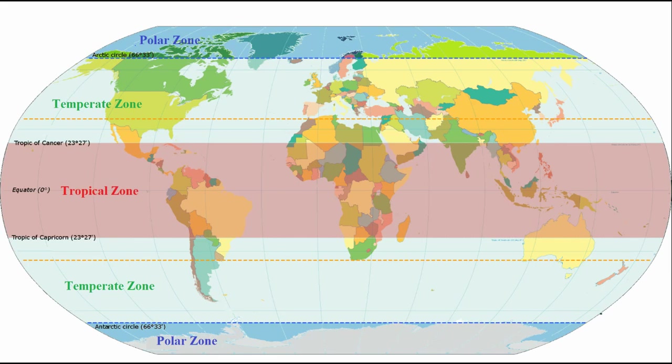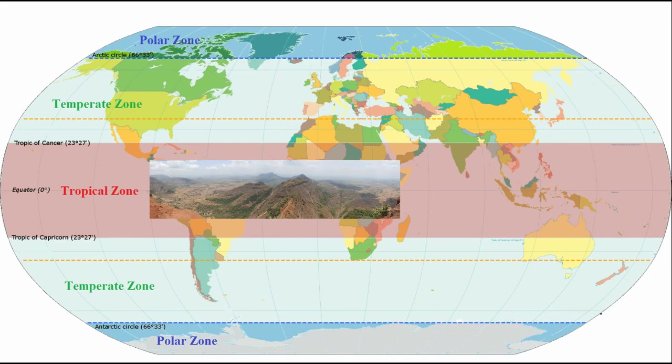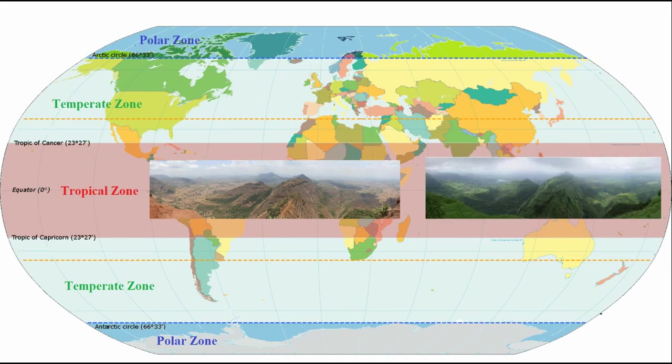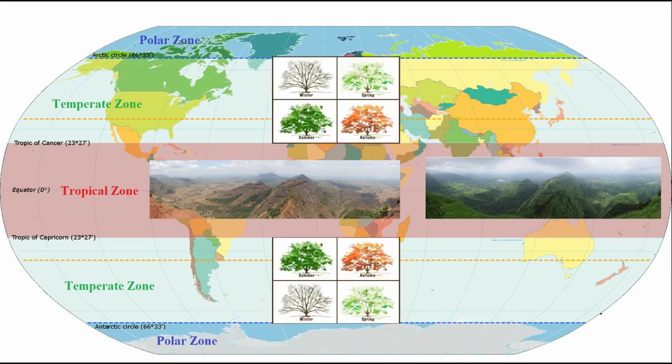Instead, it's hot pretty much all the time, and you often get a dry season and a wet season. Getting farther away from the equator, we have the temperate zone, where you have the regular four seasons. Though, of course, they're opposite in the north and the south.